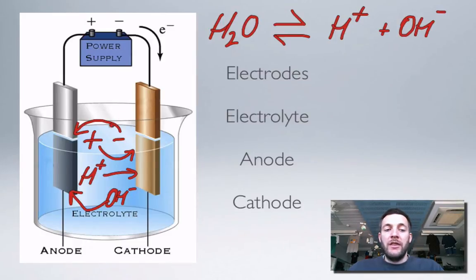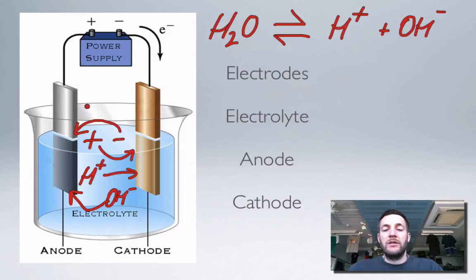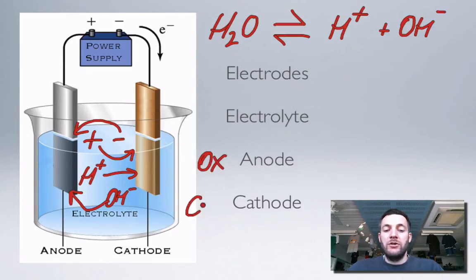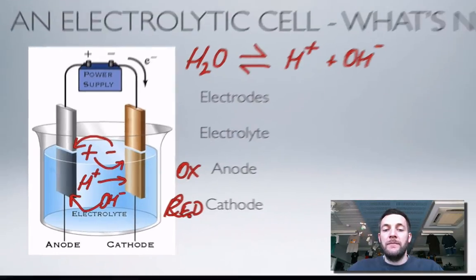The other thing that is new here is that the electrodes — what they're made of — will actually influence what products form during electrolysis. You don't have to predict what products will form; you just look at the results of your experiment and decide what products have formed. Oxidation still happens at the anode and reduction still happens at the cathode — that hasn't changed.